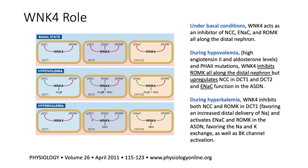Now the molecular mechanism of the aldosterone paradox: under basal conditions, WNK4 acts as an inhibitor of the NCC, ENaC, and ROMK along the distal nephron. When we have hypovolemia, angiotensin II and aldosterone are activated. In that case, WNK4 inhibits ROMK along the distal nephron but upregulates the NCC and ENaC — because you want to reabsorb sodium via NCC and ENaC, and you don't want to excrete potassium, so ROMK is inhibited.